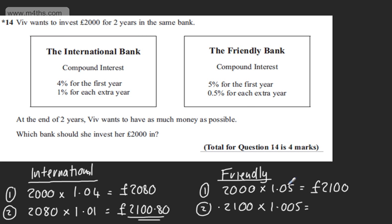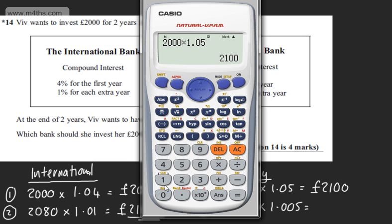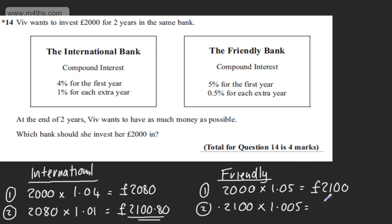We've got 1.05, that's 5%. 1.005 will be half a percent. So multiplying my answer, let's just put this in. That's going to give me now, on here, £2,110 and 50 pence. So £2,110 and 50 pence.